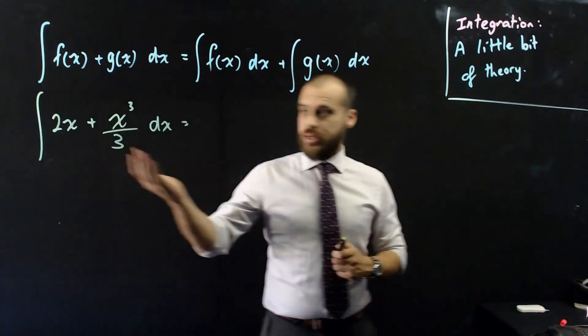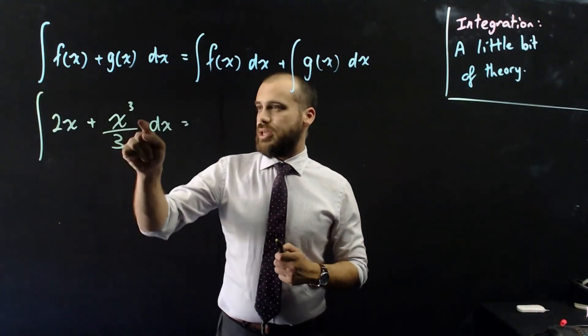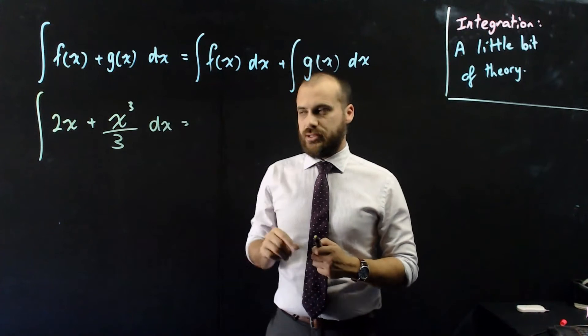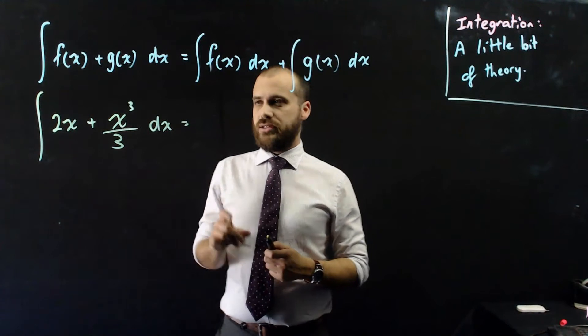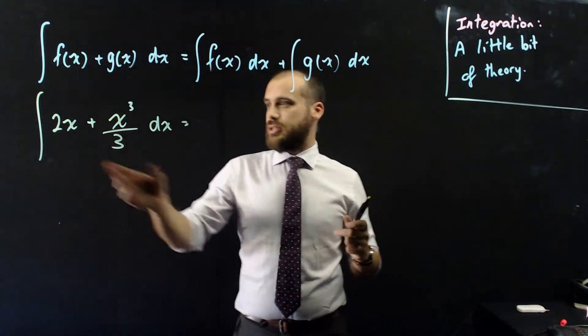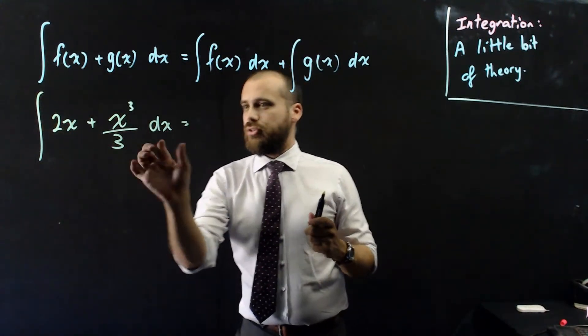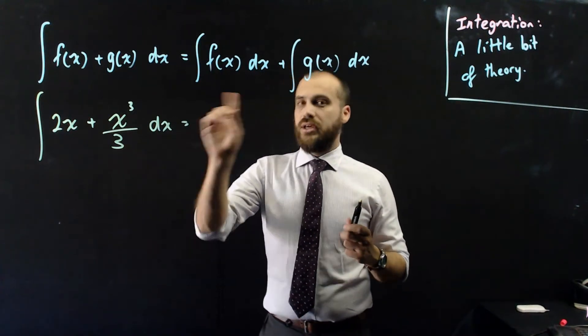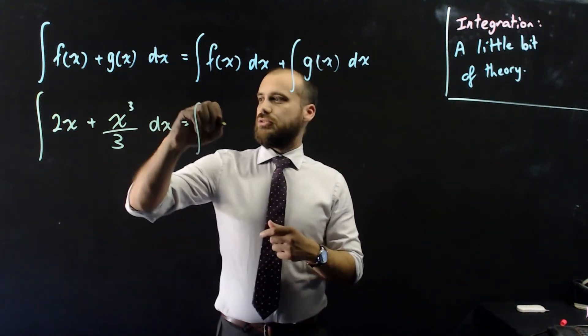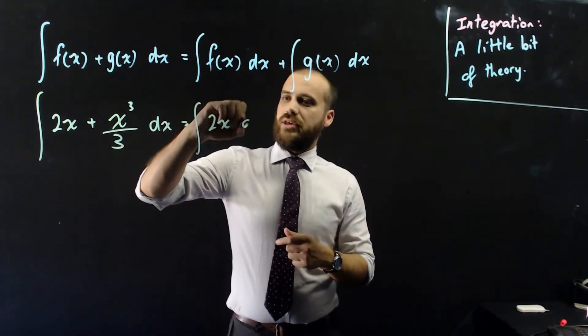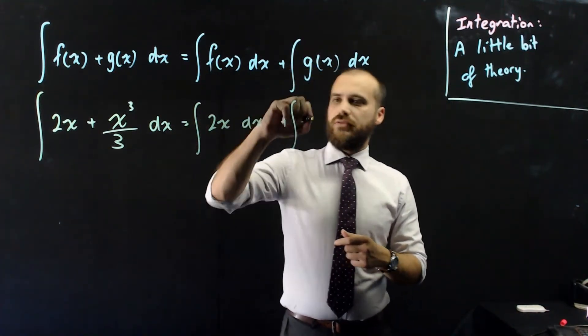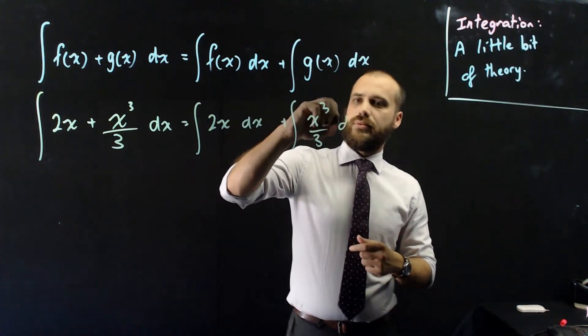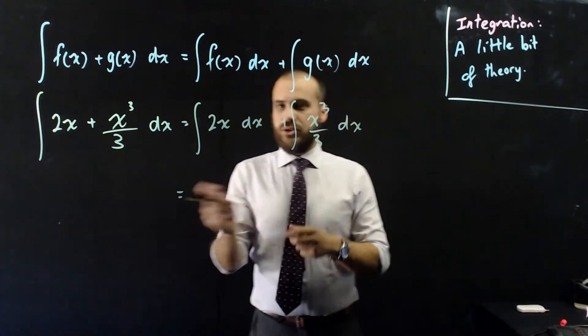For example, the integral of 2x plus x cubed on 3 with respect to x. Now, we can treat 2x as f of x, and we can treat x cubed on 3 as g of x. And our little formula here says that the integral of that whole thing, which is a function plus a function, is equal to the integral of that thing, 2x, plus the integral of that thing.